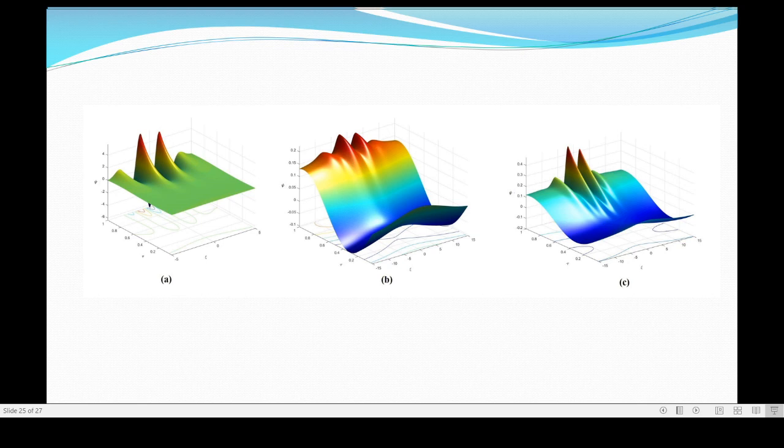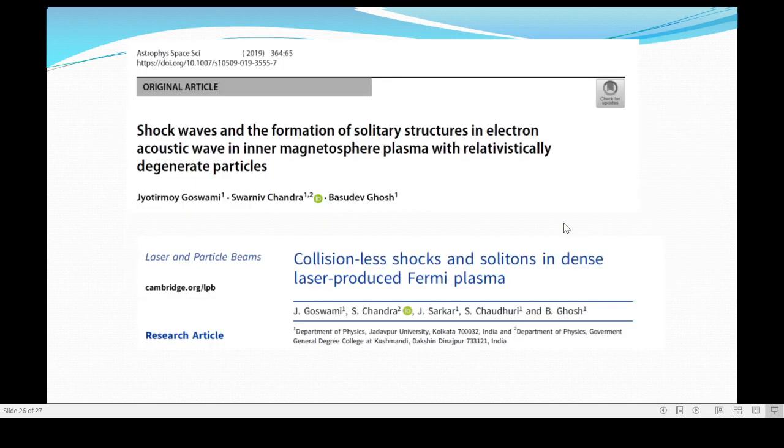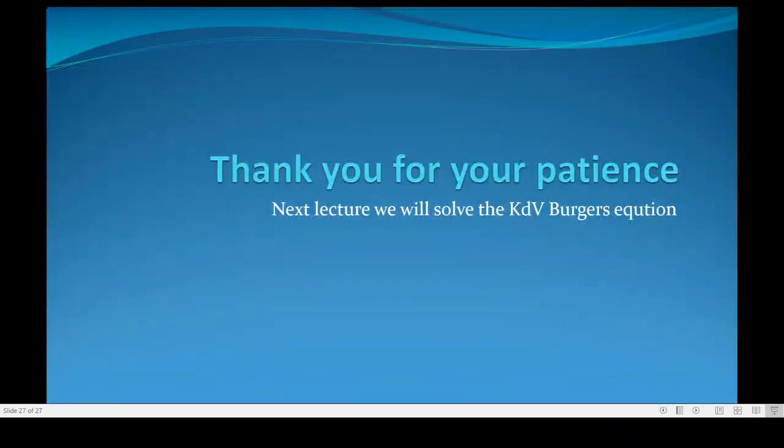Now, here also, how the shock profiles develop into solitary profiles. Here, these are the parameters, Xi Tau. And these are the different parametric variations of one of our articles. So, a few of our articles is carried by Jyotima Goswami and published in Astrophysics and Space Science in Springer, and in Cambridge, Laser and Particle Beams. So, thank you for your patience. In the next lecture, we will try to solve the KdV Burgers equation.